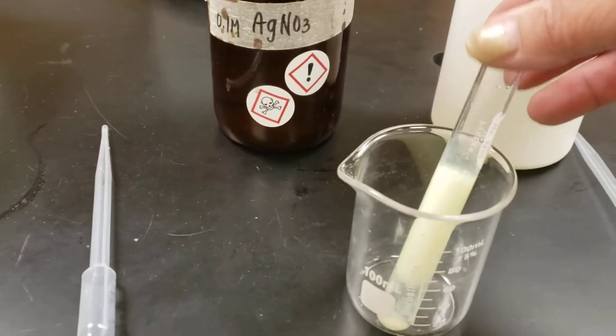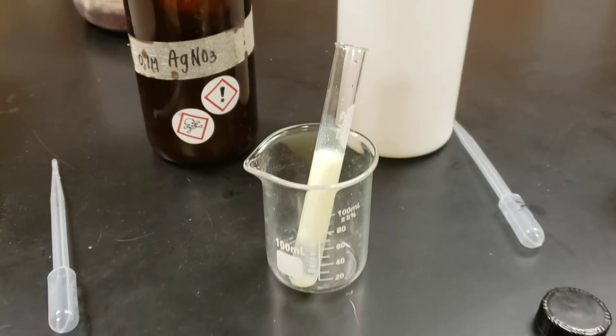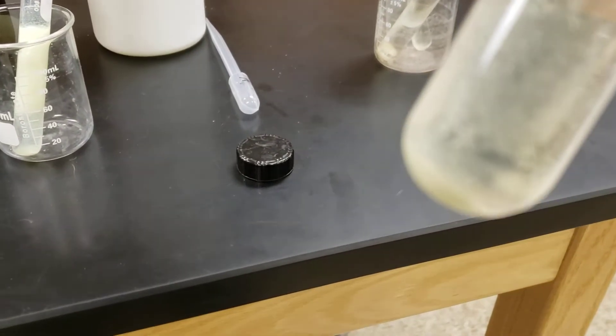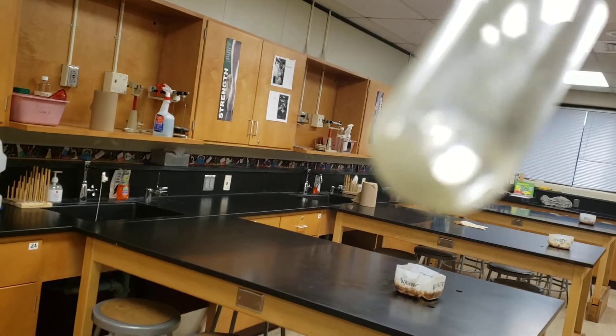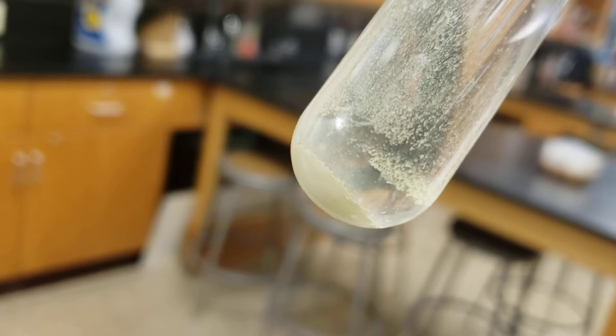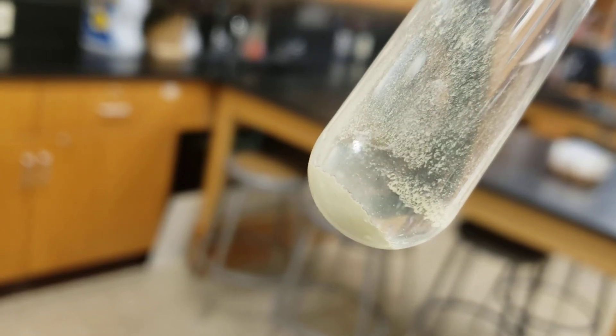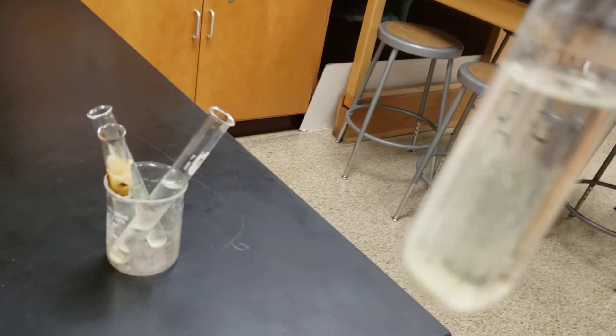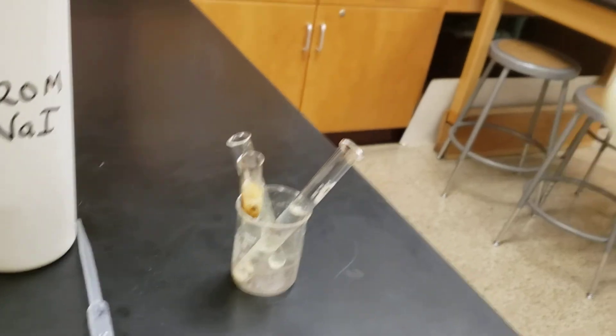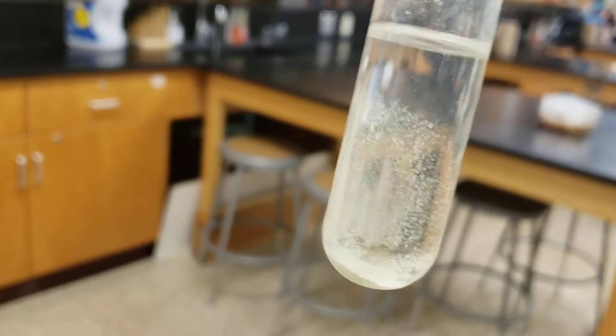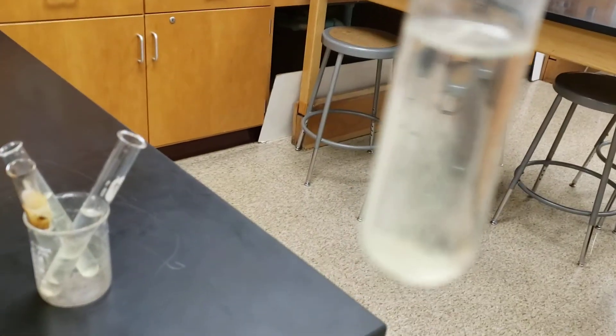Notice how we have that yellow solid at the bottom. I'll try to show you here. You see it in the light? There you go. See that solid at the bottom? And basically it's becoming a clear solution at the top. So we have two products: the solid at the bottom and the aqueous solution at the top.